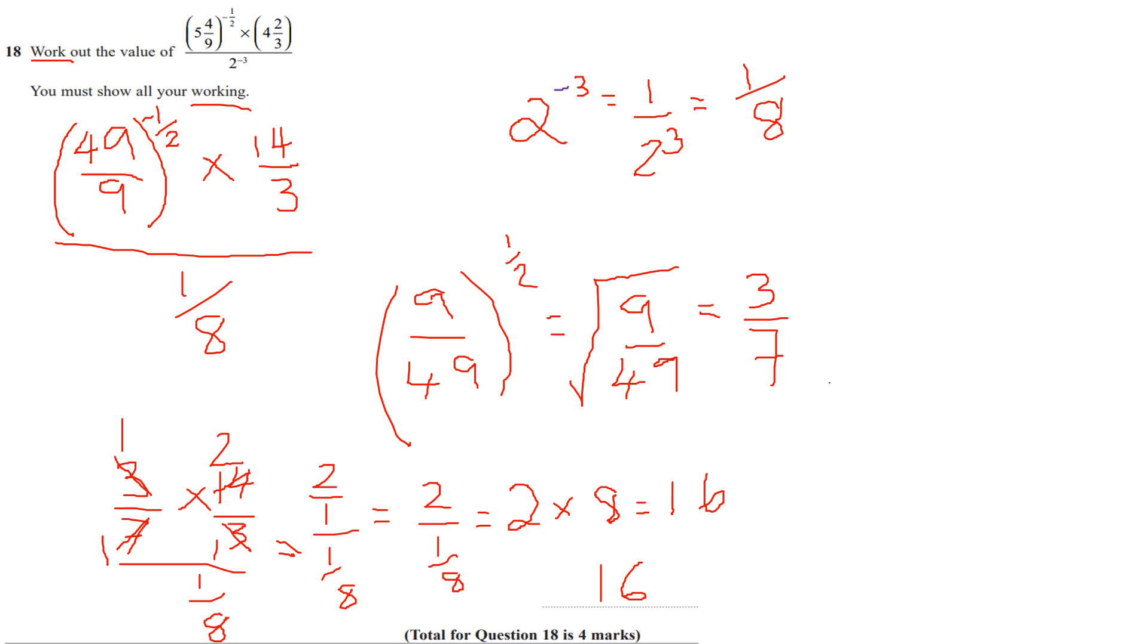So remember, when you divide by a fraction, I've got a video on the channel already on this, you keep a flip chain. So you keep the first fractional number the same, you multiply by its reciprocal. And you get 16 over 1 or 16 over 1, which is just 16. And that's my final answer.